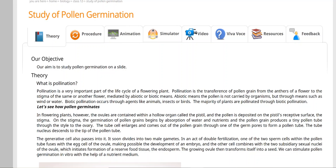Pollination is a very important part of the life cycle of flowering plants. Pollination is the transfer of pollen grains from the anthers of a flower to the stigma of the same or another flower. It is mediated by abiotic or biotic means. Abiotic means the pollen is not carried by organisms but through means such as wind or water.